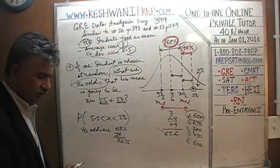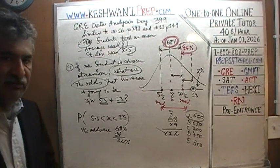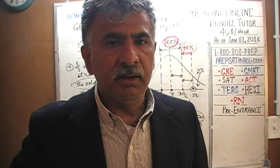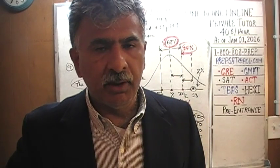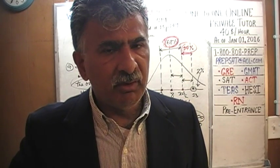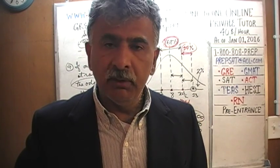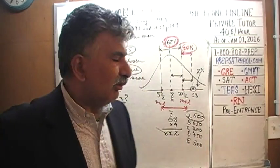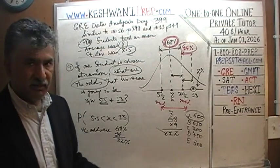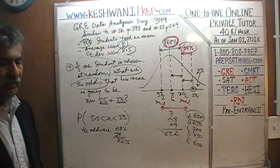The answer is 82%. There is an 82% chance that if you pick one score at random it will fall between 5.5 and 13. It's very likely — more than 8 out of 10 times — because that is a big range given that the standard deviation is only 2.5.